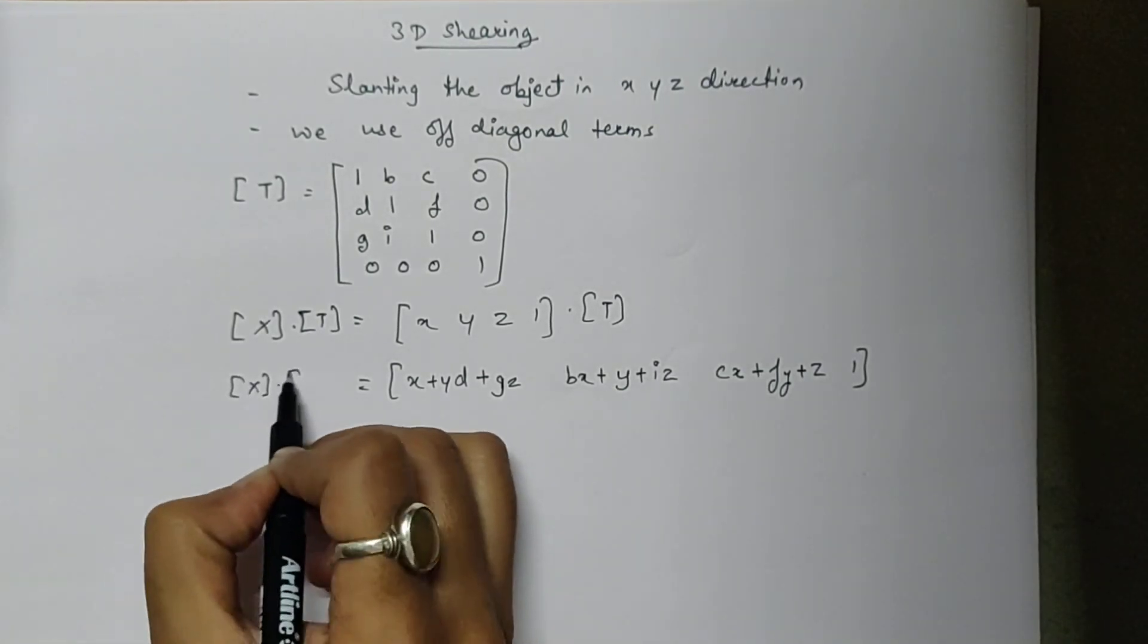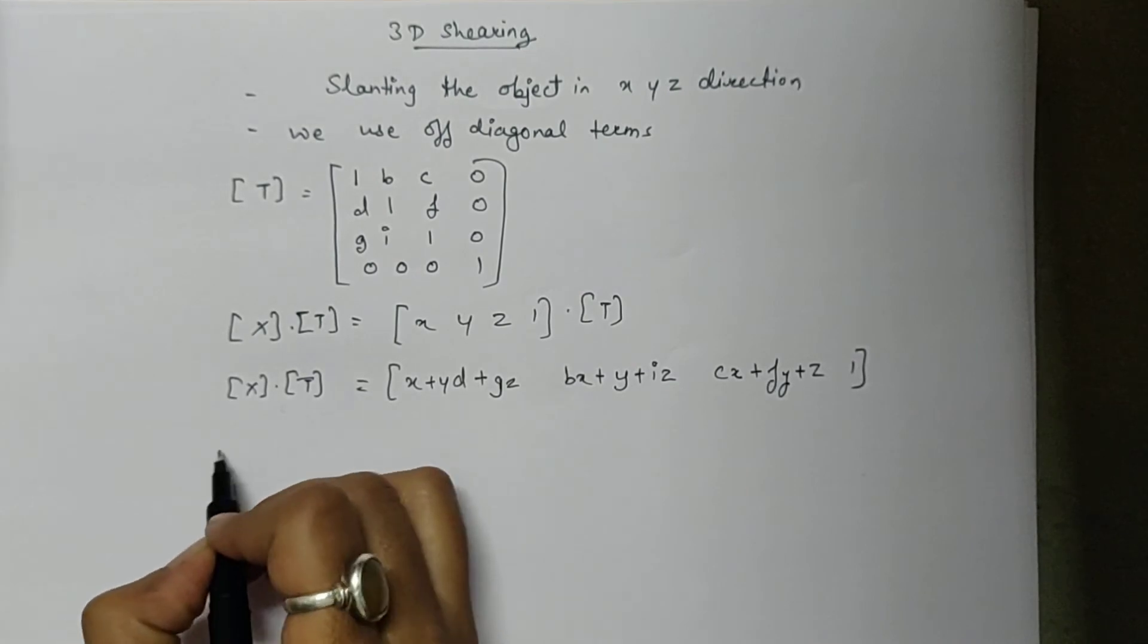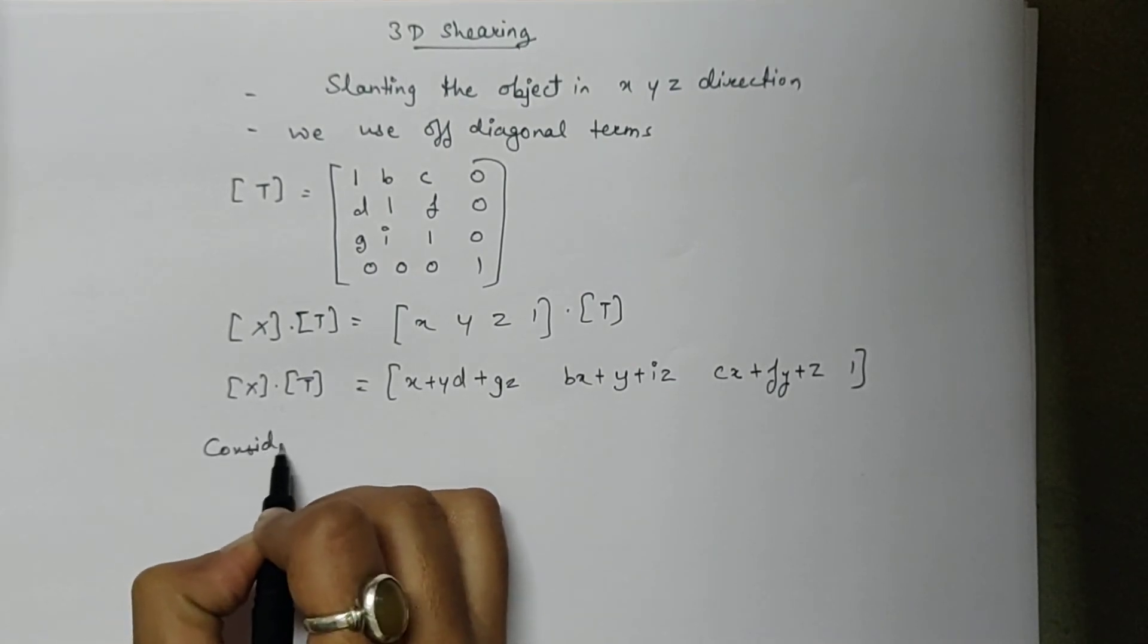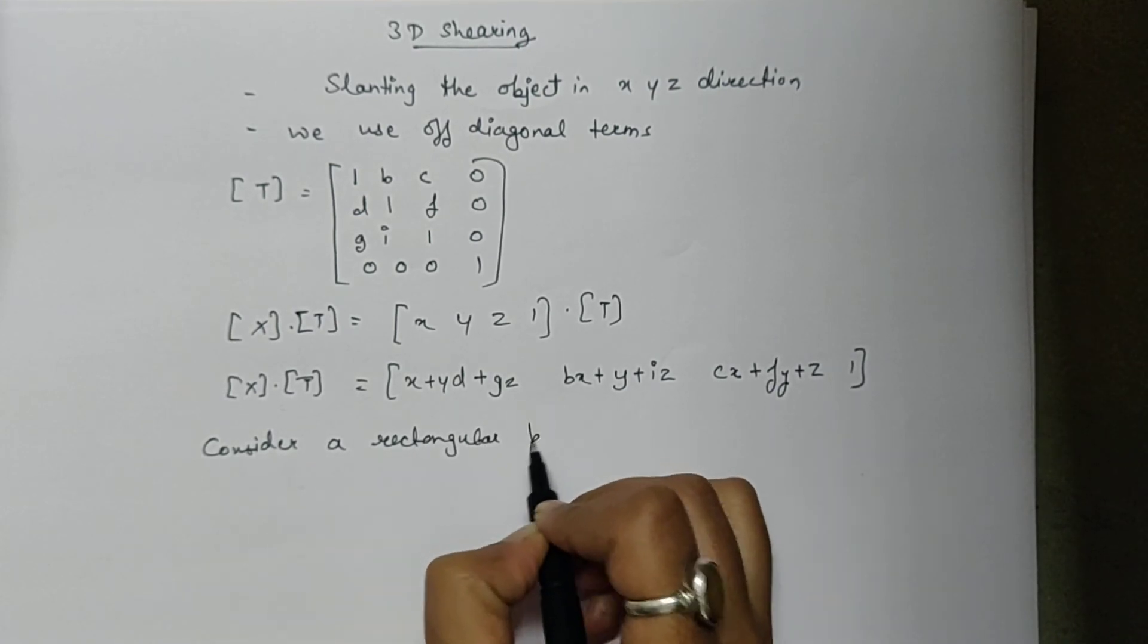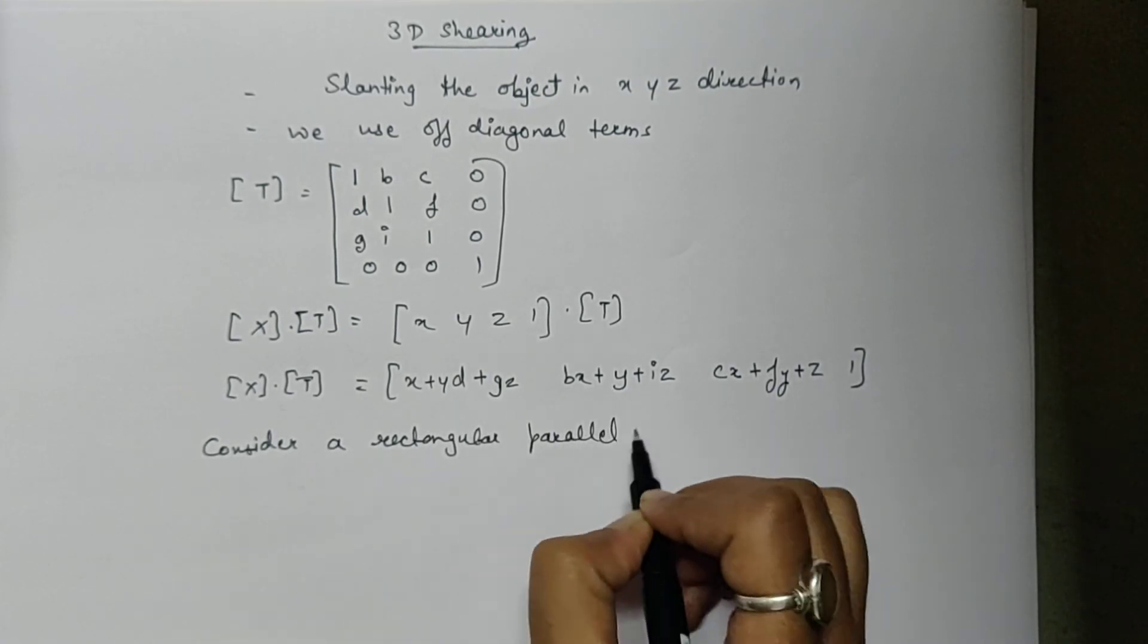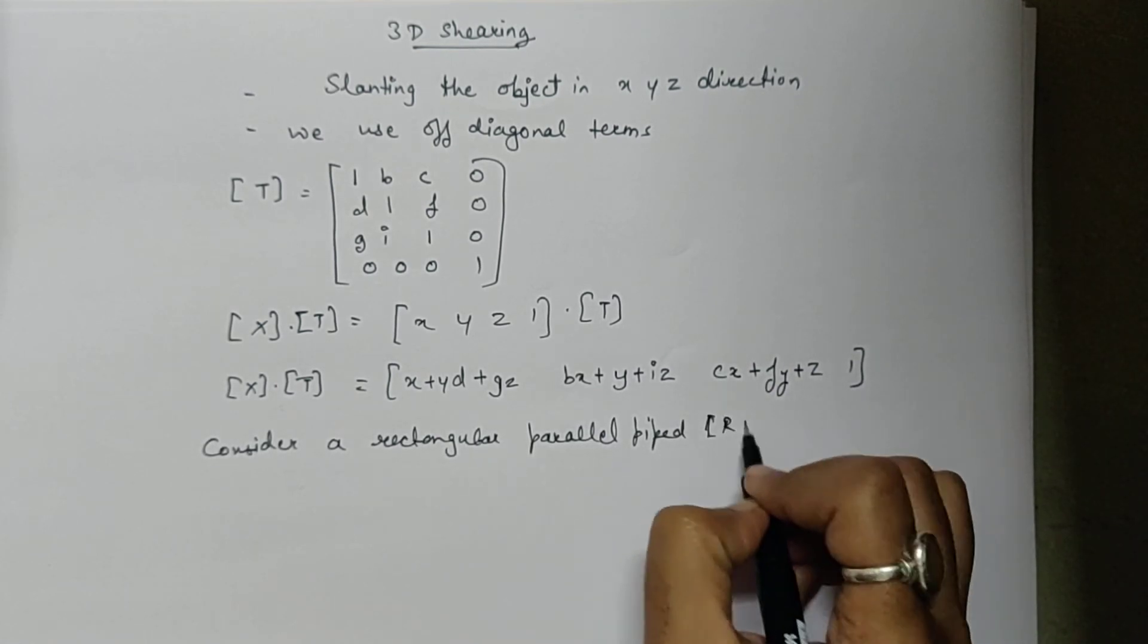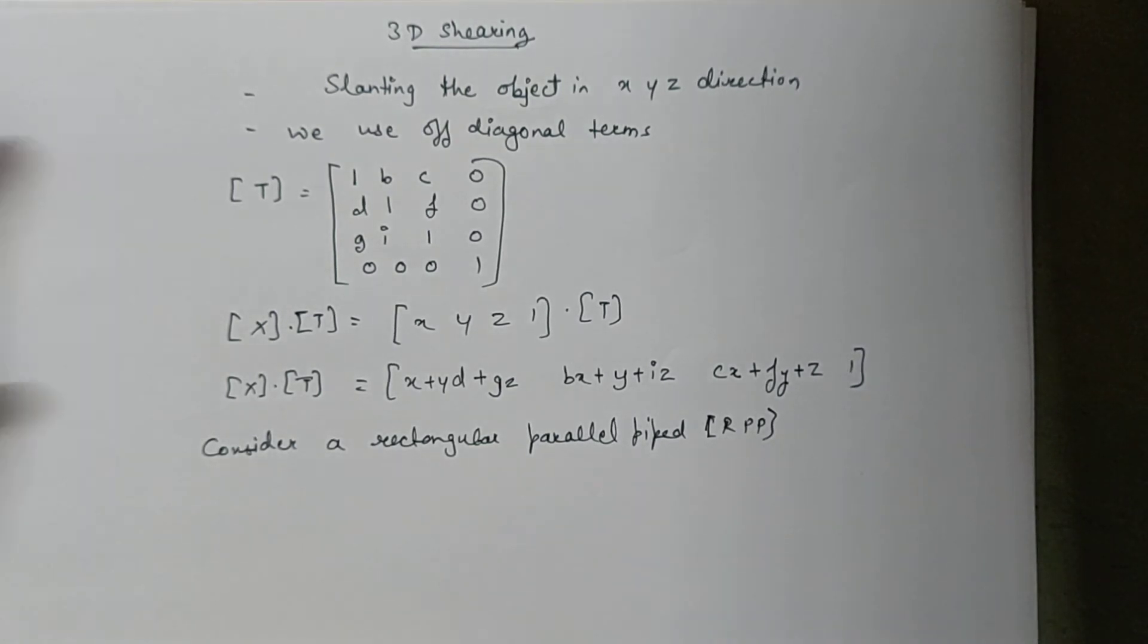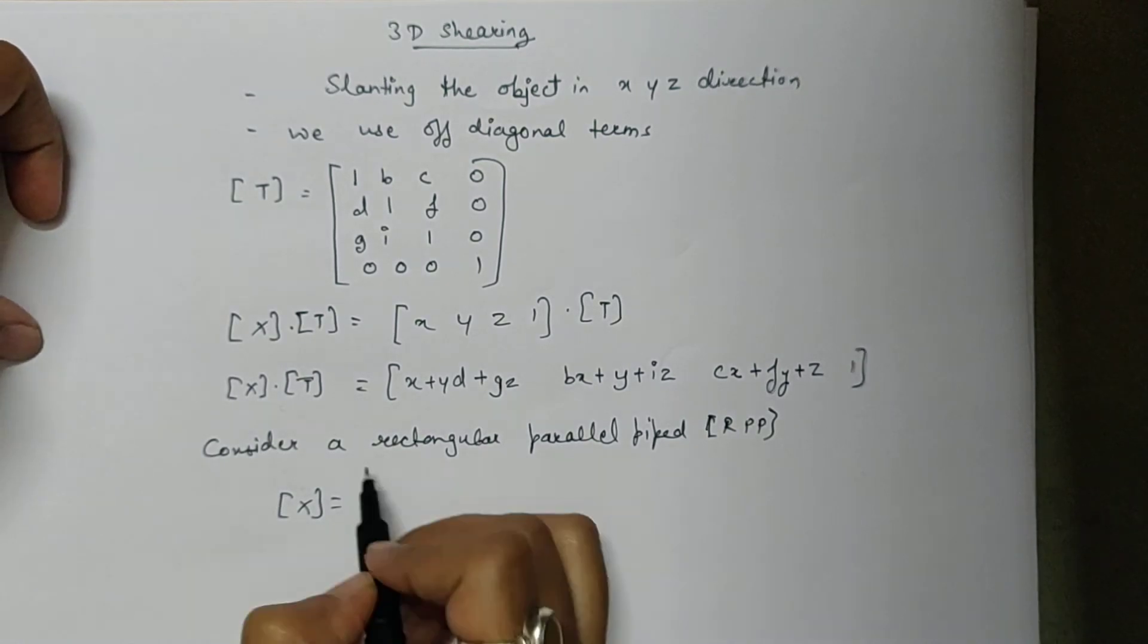This is the formula for shearing. Let's take one example. Consider a rectangular parallelepiped, which we call RPP. The original points are already given.